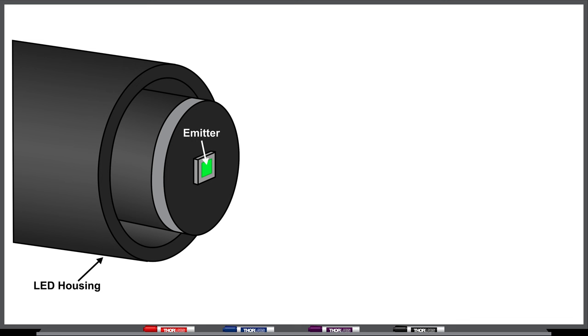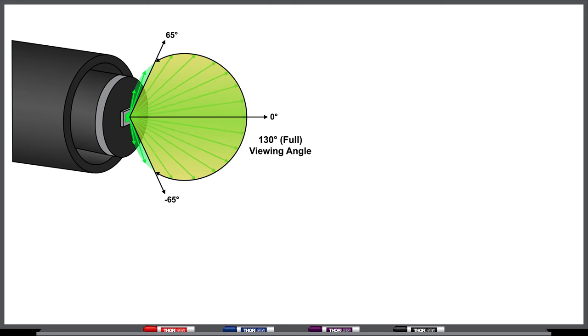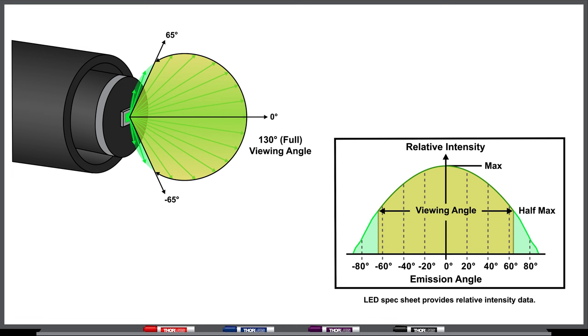There are two important LED properties to consider when collimating light. One is that LEDs emit light over a wide angular range, described by the LED's divergence or viewing angle. This angle measures the full width half max of the intensity profile with respect to the full angular range.